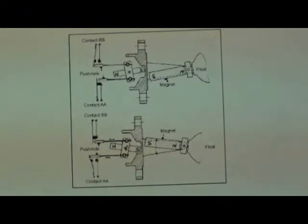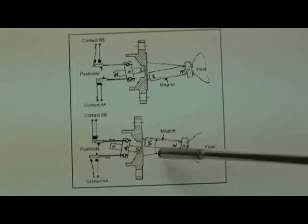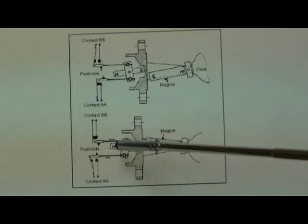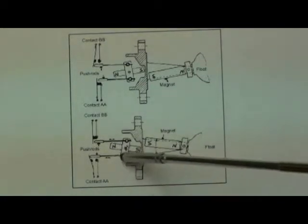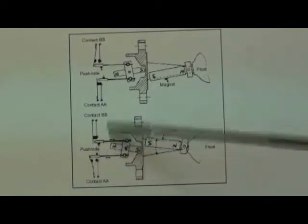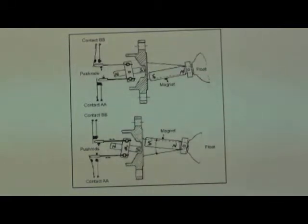Switching is accomplished by the angular movement of the switch magnet being used to operate push rods. These rods bear on the contact blades and break one set of contacts whilst allowing the other set to make.